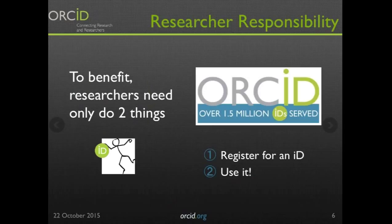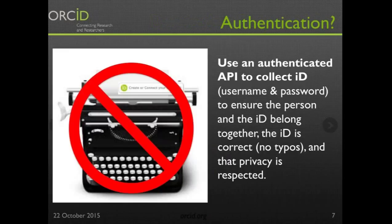ORCID is very community-focused but also researcher-focused. For ORCID to be successful, researchers need to use their digital name. To benefit from ORCID, researchers really need only to do two things: the first is to register for an identifier, and the second is to use it. I'm hoping to give people on this call some ideas and tools for how to communicate with researchers about engaging with ORCID, and also how to build ORCID identifiers and other persistent identifiers into your systems.